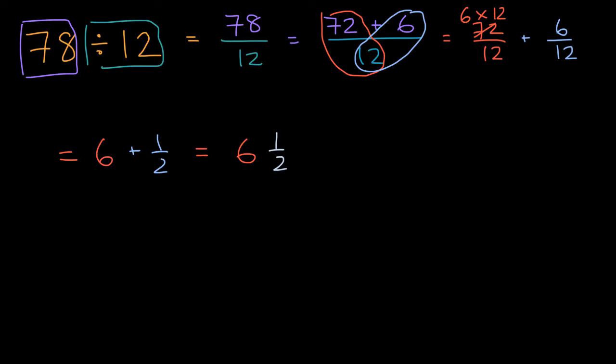And if I wanted to express that as a decimal, that's the same thing as 6 ones, and then how many tenths? Well, one-half is the same thing as 5 tenths, so 6 and 5 tenths. So there you go. That's one way of trying to compute what 78 divided by 12 is.